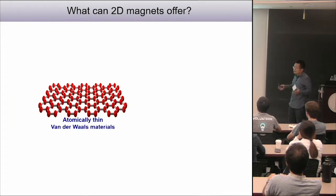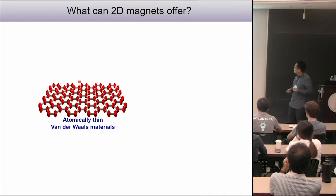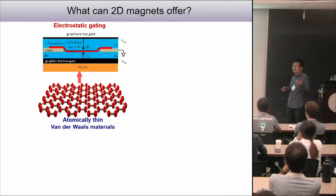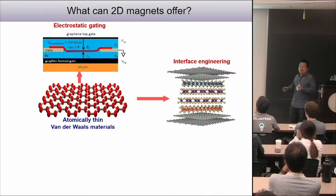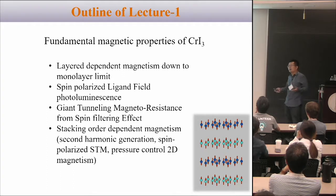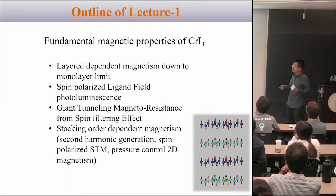For two-dimensional systems, which are atomic thin, it's easy to apply electrostatic gating to drastically dope the system and induce phase transitions. Or we can apply electric fields to change fundamental properties. We can also do heterostructure engineering — we all know why Scotch tape is a powerful technique. Because of van der Waals forces, we can stack any two-dimensional material on top of any other, giving us a lot of freedom to engineer artificial heterostructures. We're only limited by our imaginations.